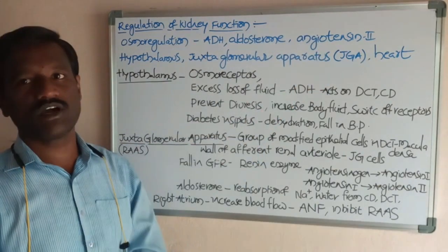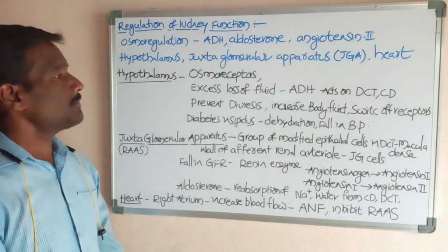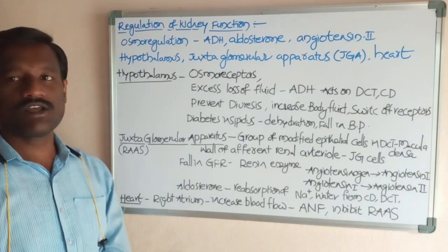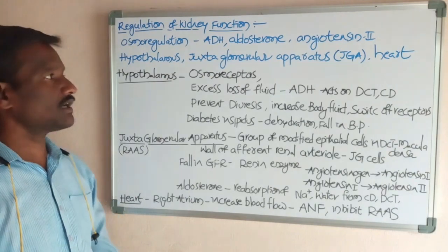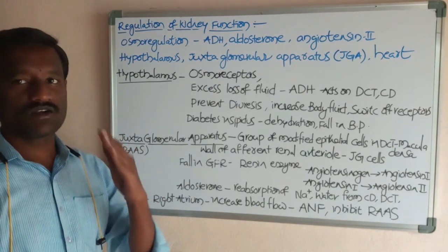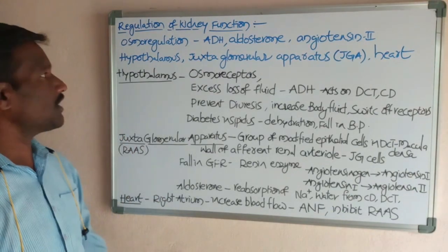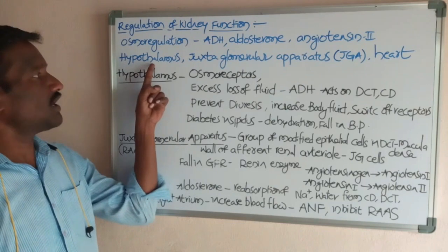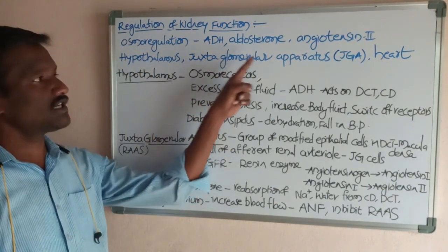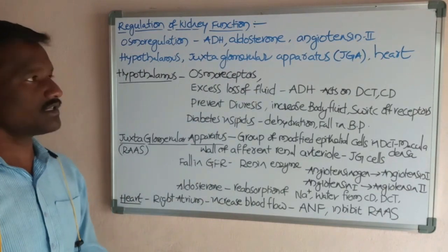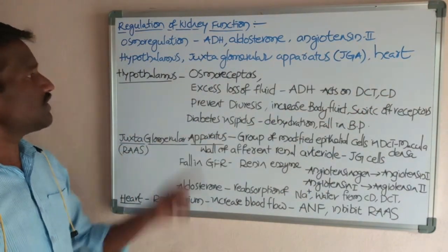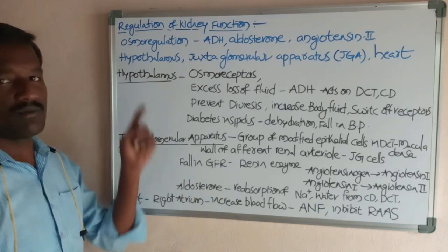The regulation of kidney function is monitored by three parts of the body: first, the hypothalamus; second, the juxtaglomerular apparatus; and third, the heart.